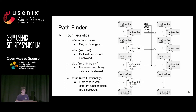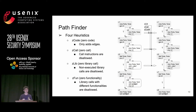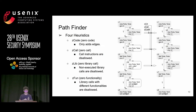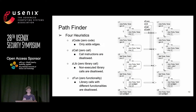The last heuristic is 'same functionality' — on the inferred code path, we allow call instructions to call library functions, even non-executed library functions, but only if the targets share the same functionality as some called library functions. For example, the call instruction in L8 calls SQRTL — not executed at all — but in L9, a call instruction calls SQRTF, which is executed. Since SQRTL and SQRTF share the same functionality, after applying this heuristic we would include the code in L8.